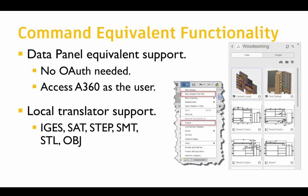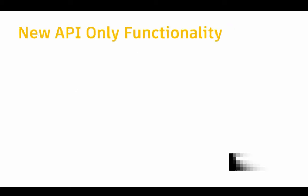Fusion also has built into it some translators, not many: STEP, SMT — which is Fusion's version of SAT — STL, and OBJ. Those translators run locally on your machine, so you can use the API to translate in and out of those formats. If you need other formats, then you would have to use Forge. There's also some new functionality added in the API over the last year that's not in the UI — it's only in the API. One of the most important is attributes.